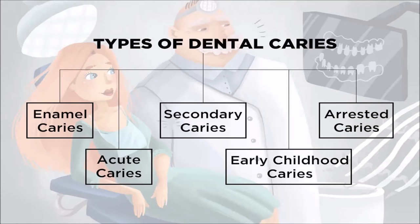There are different types of dental caries. Enamel caries means caries is only on the outer surface, the enamel. Acute caries means a sudden onset where it spreads immediately. Secondary caries is after getting a tooth filling where the caries action has not stopped — it is still propagating beneath the filling. Arrested caries would be seen as a black area on the tooth. And early childhood caries is when young children develop caries.